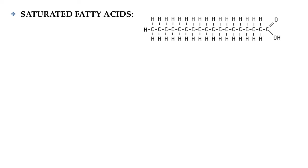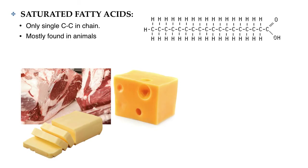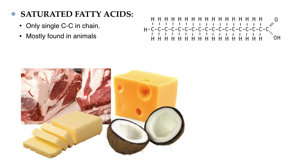Saturated fatty acids only have single bonds between carbon atoms in their hydrocarbon chains. They're mostly found in animal fats, but some plants, like coconuts, have a lot of saturated fats in them.